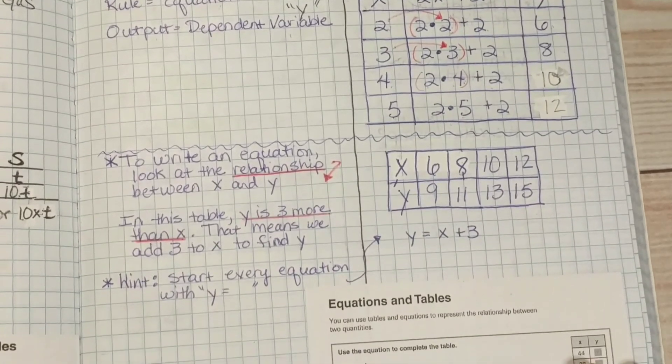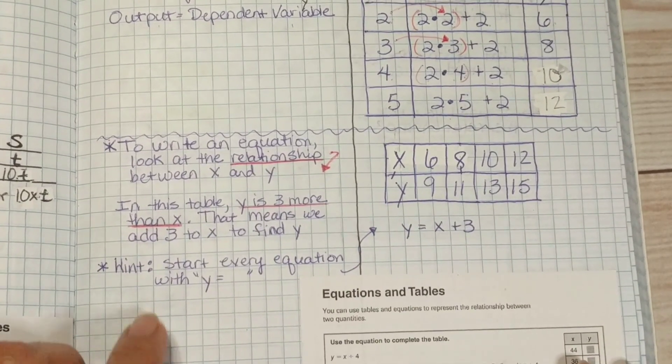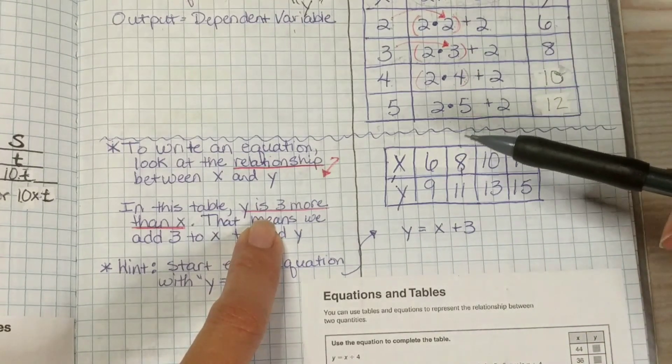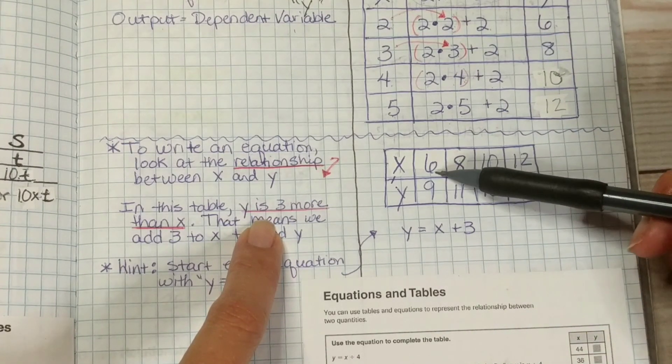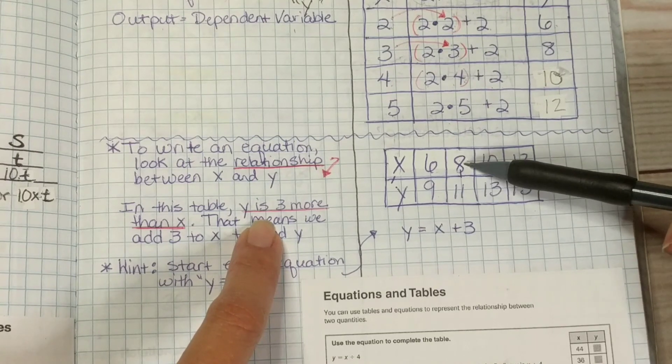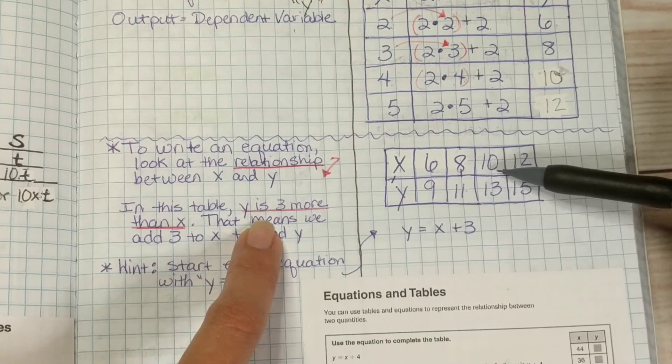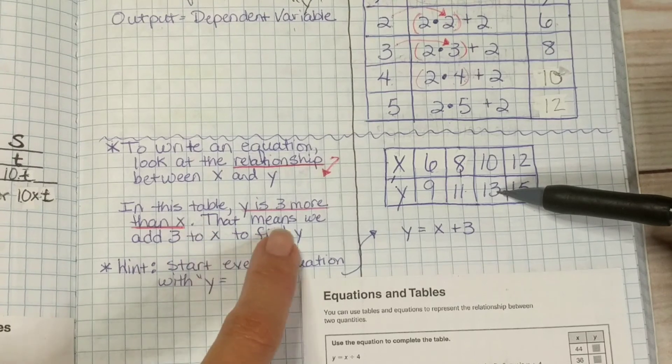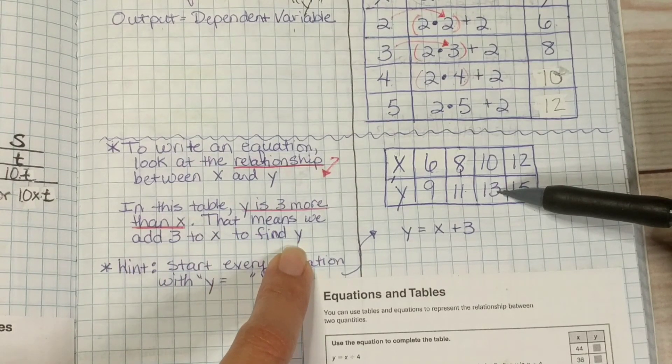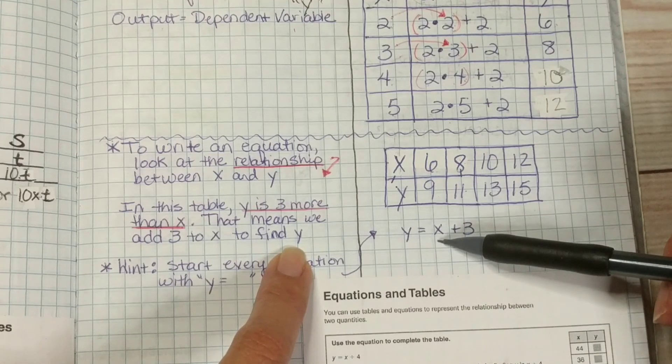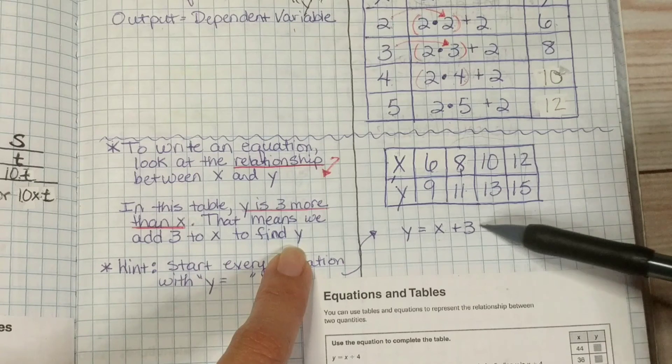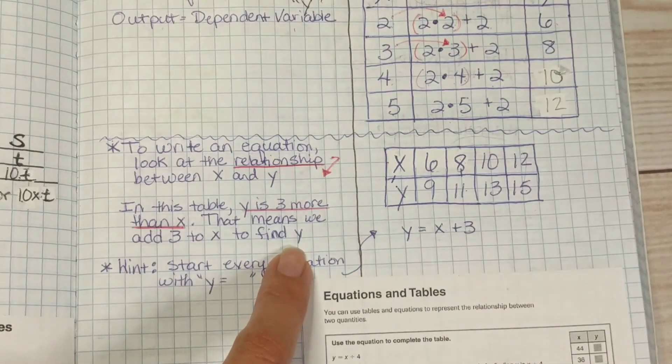To write an equation, we look at the relationship between X and Y. In this table, Y is 3 more than X. 6 plus 3 gives us 9. 8 plus 3 gives us 11. 10 plus 3 gives us 13. That means we add 3 to X in order to find Y. So, this is what the equation would look like. Y equals X plus 3 for this set of data or values.